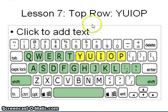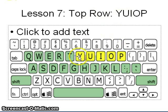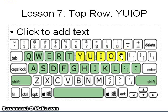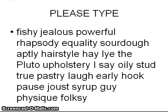Lesson number 7 is on the top row, typing Y, U, I, O, P. For Y and U, use your right index finger. Letter I, right middle finger. Letter O, right ring finger. And letter P, right little finger. The activity for that lesson.